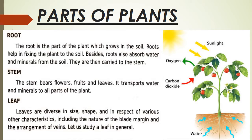But from where do animals get food? Animals also depend on plants or other animals for food. Then the question arises: from where do plants get their food? The green leaves are the kitchen of the plant — just as your mom prepares food for you in the kitchen, the plant prepares food in leaves for the whole plant. Let us learn about them.